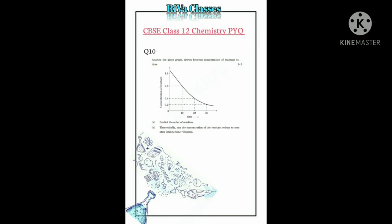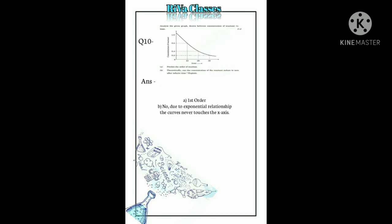Question number ten: Analyze the given graph drawn between concentration of reactant versus time. (a) Predict the order of reaction. (b) Can the concentration of reactant theoretically reduce to zero after infinite time? Answer: This is a first-order reaction, and in a first-order reaction, the concentration of reactant can never theoretically reach zero.